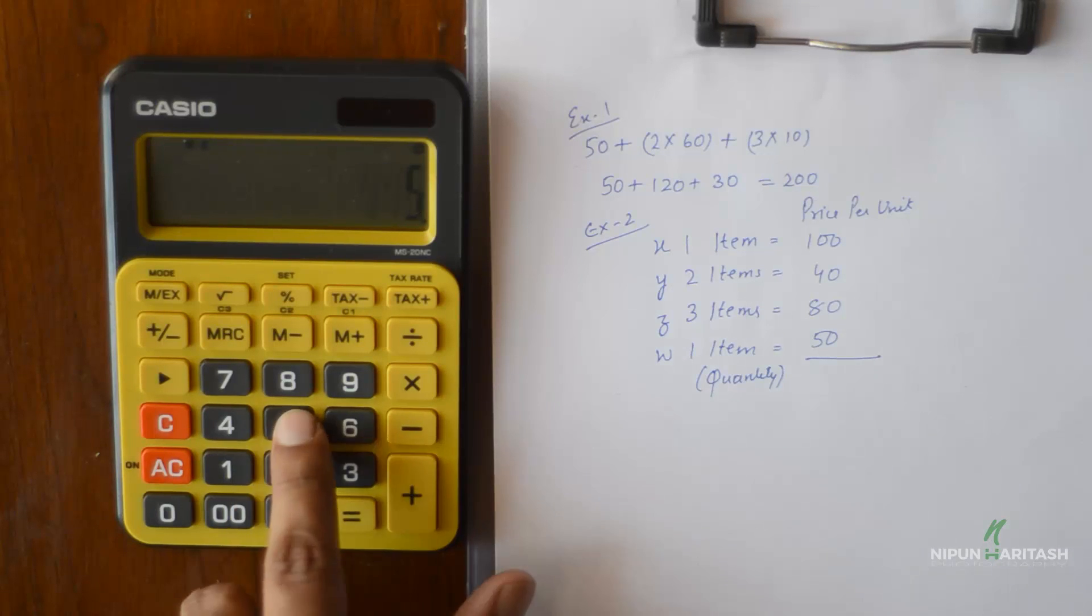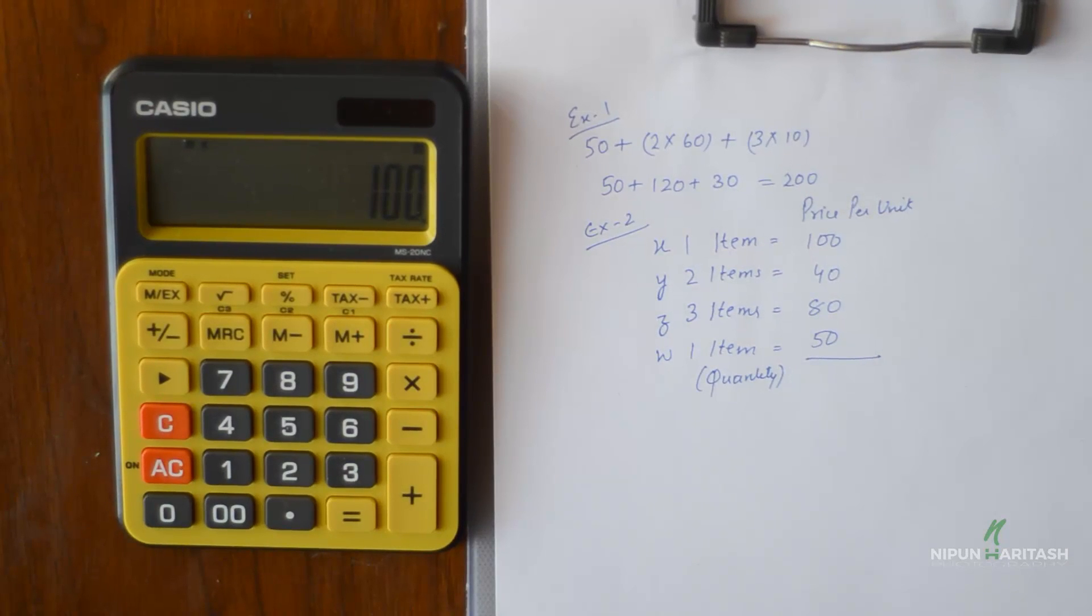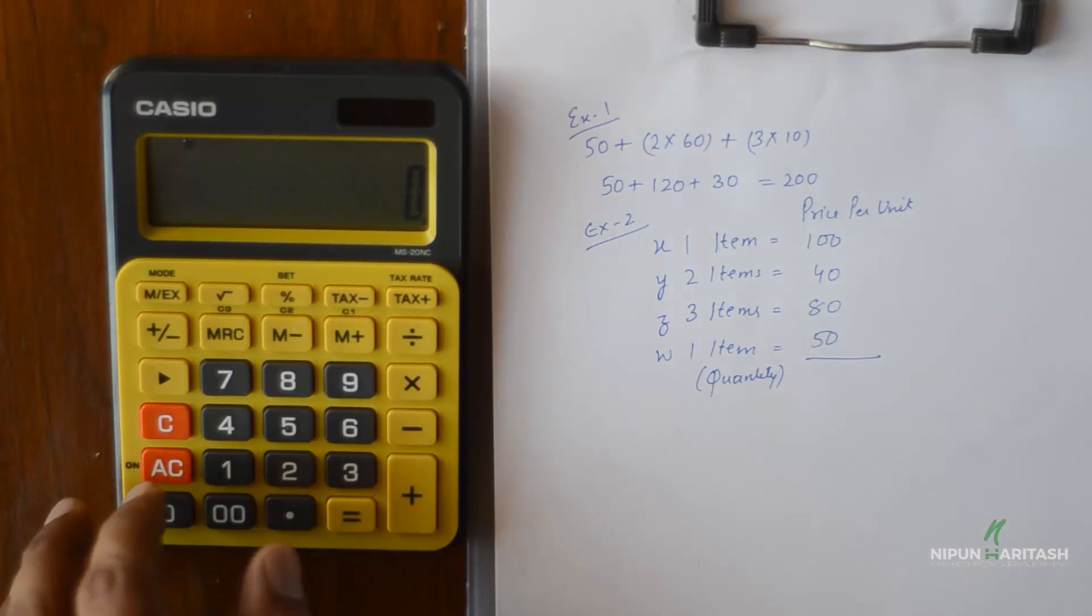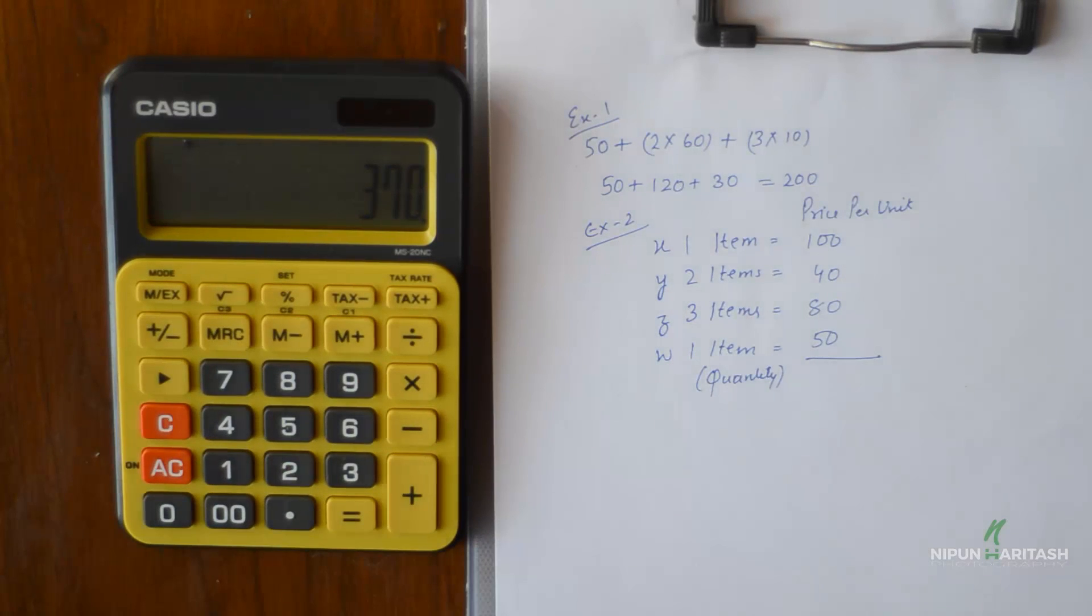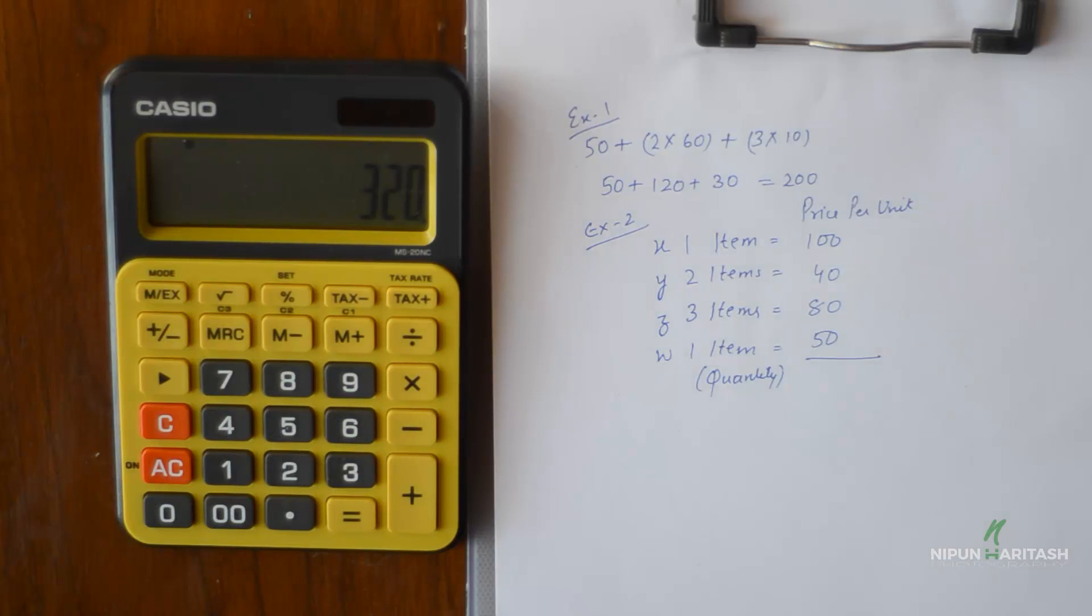If you want to subtract something from this memory, it's as simple as that. You can press the number and press M-. Let's say the previous stored value is 370 and I want to subtract 50 from that, it becomes 320.